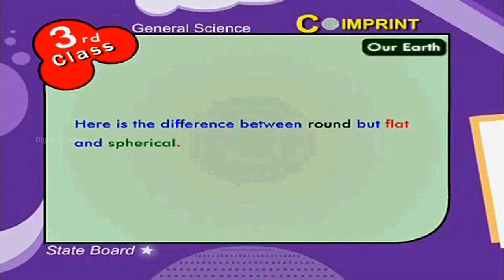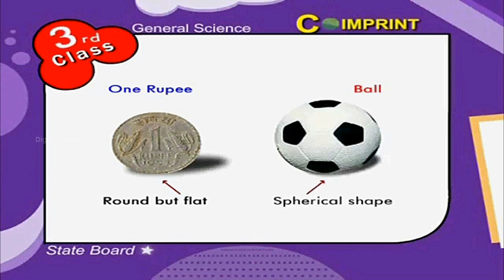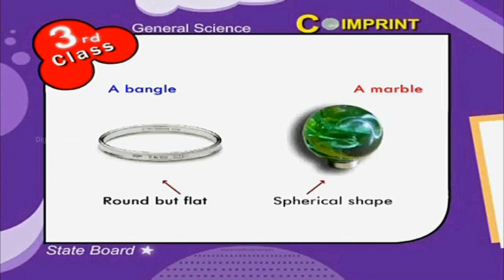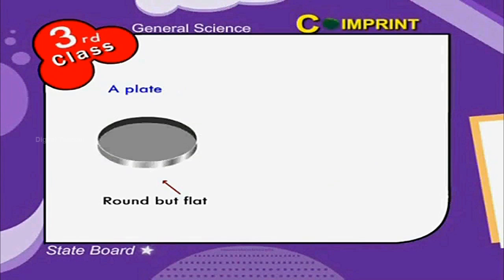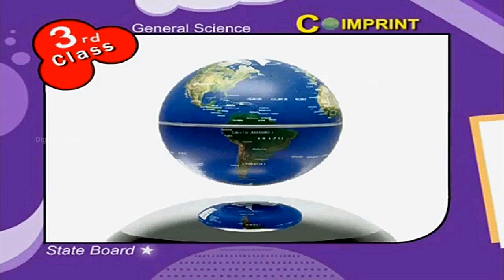A one rupee coin and a ball — a bangle and a marble — a plate and a lemon. We hope you got the difference. Hence, we must always say that the Earth is spherical in shape.